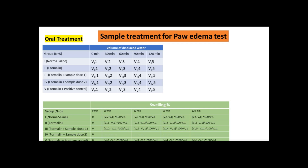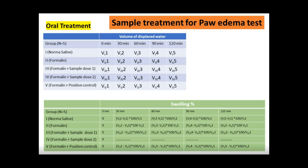For example, for the normal mice group at time 0, the average volume is VI1; at 30 minutes it may be VI2, VI3, VI4, VI5. For the formalin-only control group, the initial average volume at time 0 may be VI1, VI2, VI3. For the formalin plus sample treatment group at dose 1, it may be VI1, and at different time points VI2 and VI3. Similarly, for formalin plus sample dose 2 it can be VIV1, VIV2. For the positive control indomethacin group, the volume can be VIV1, VIV2, VIV3 at different time intervals.